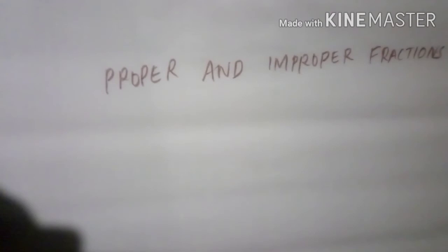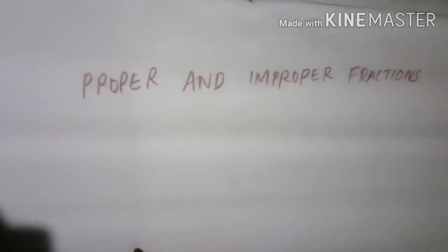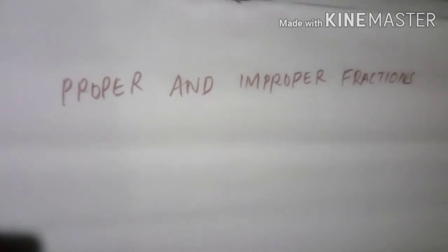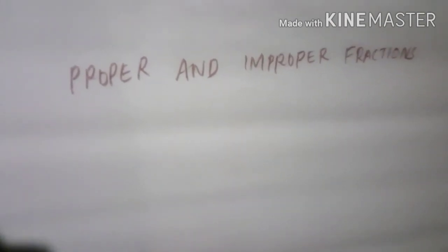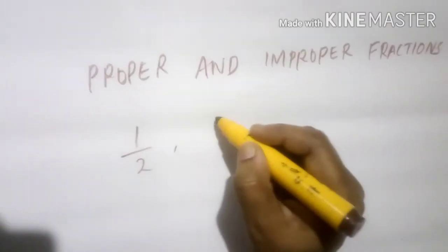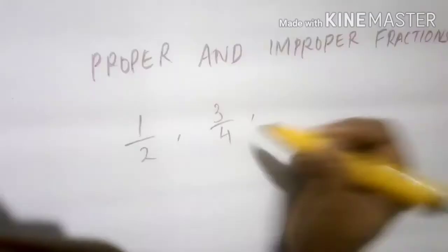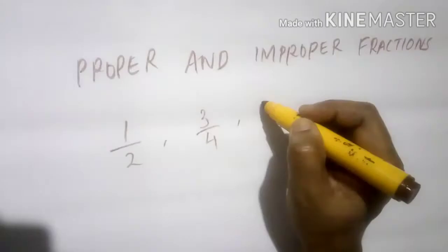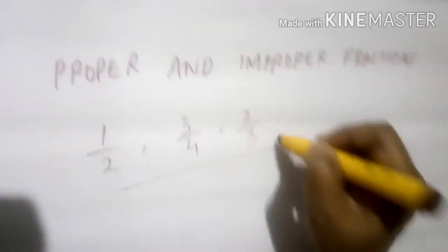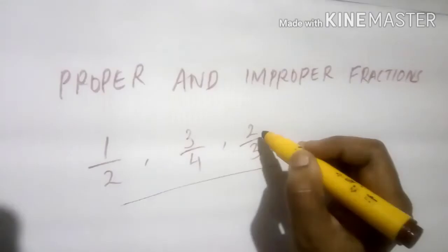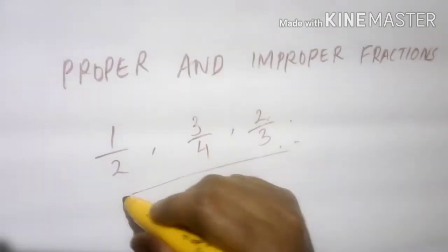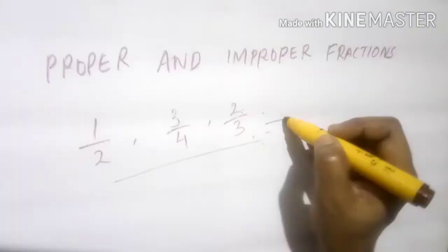Fractions which are less than one whole are called proper fractions. In a proper fraction, the numerator is smaller than the denominator — like 1 by 2, 3 by 4, 2 by 3. These kinds of fractions are called proper fractions.